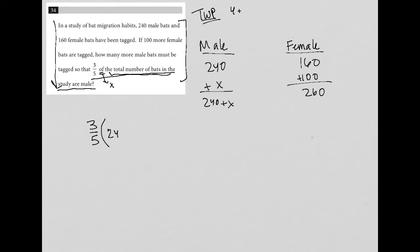It's the male bats, so 240 plus x plus the female bats, plus 260. So here is my three-fifths of the total number of bats are, so equals male. Well, what's the male bats again? 240 plus x. Here's my translation of that final half of the sentence.